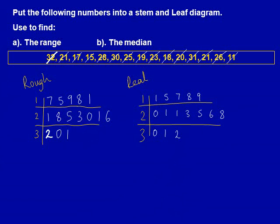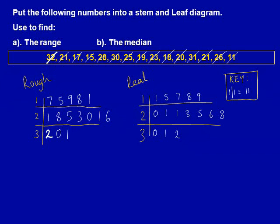This stem and leaf diagram is now almost complete — it just needs a key. Draw a box with the word 'key' written in it next to your stem and leaf diagram. The key shows you how to read the diagram. Always pick the first number to show this. The first number is 11, and this is represented in the diagram by 1 | 1. So you need to show in your key that 1 | 1 means 11.